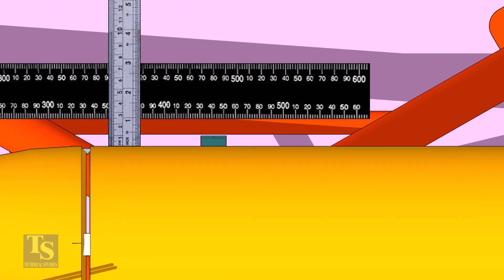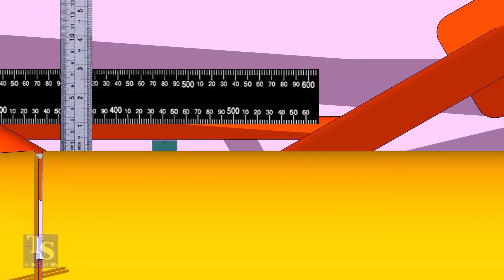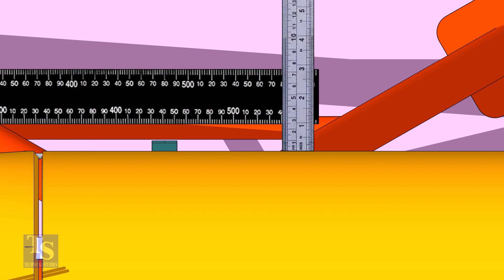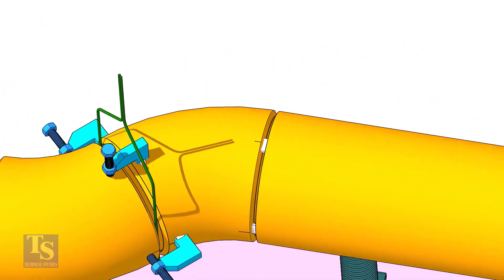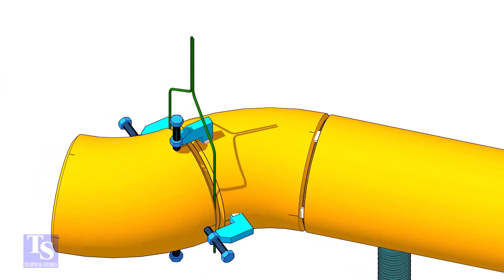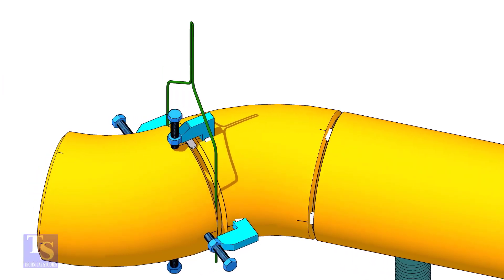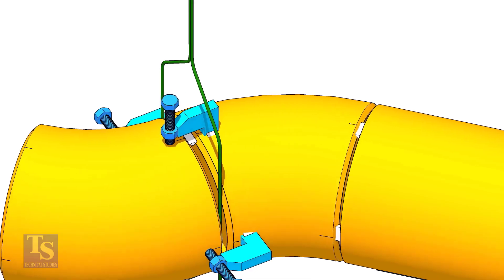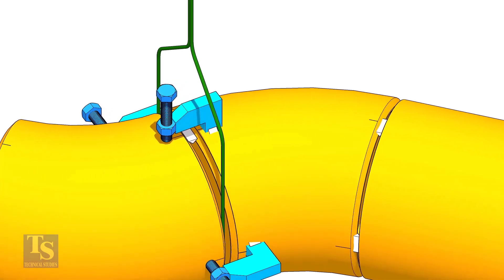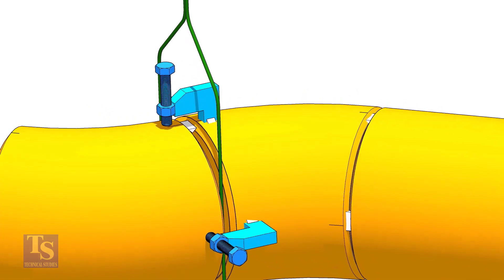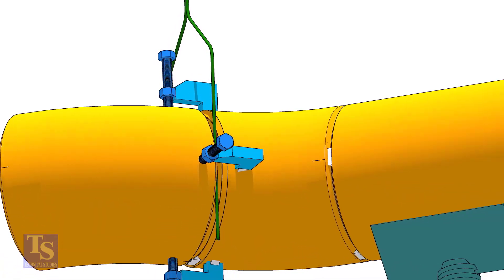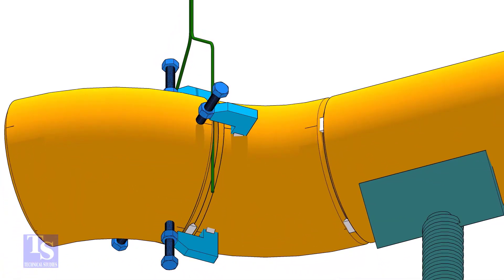If both the measurements are the same, tack weld on the top and bottom side of the joint.